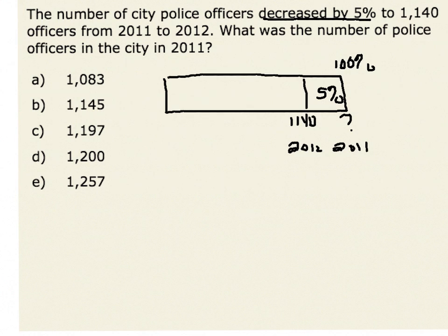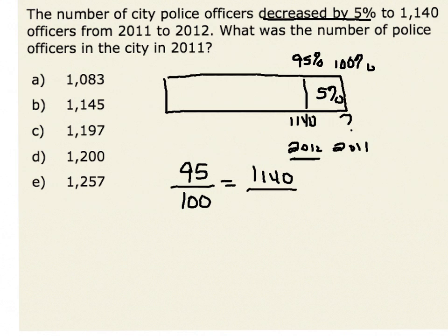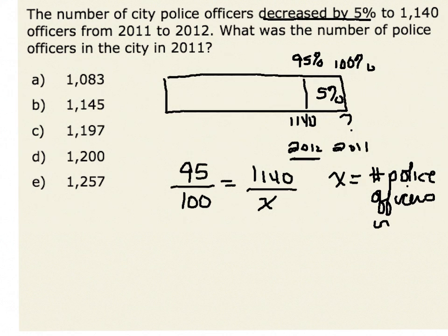What we would realize, since we decreased by 5%, is that our 2012 value represents 95% of the 2011 value, or 95% of the original value. One way we can solve this is to set up a proportional statement. We have 95%, or 95 over 100, which should be the same as our 2012 value over our original value — which we don't know — our 2011 value, so I will call that x, where x is equal to the number of police officers in 2011.